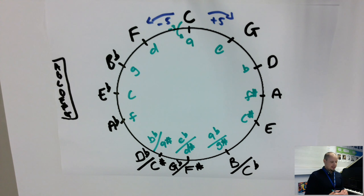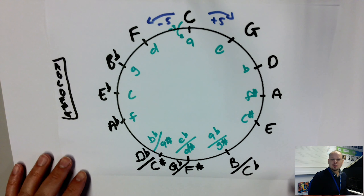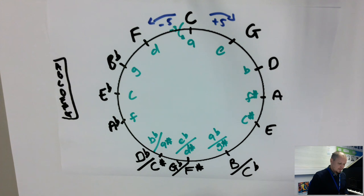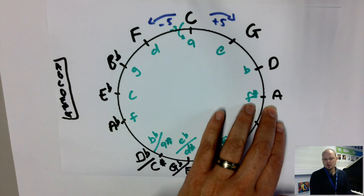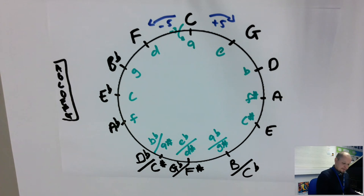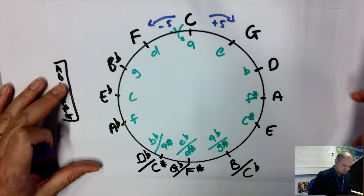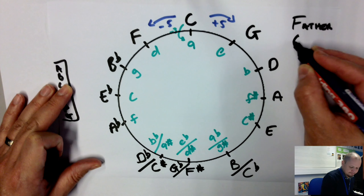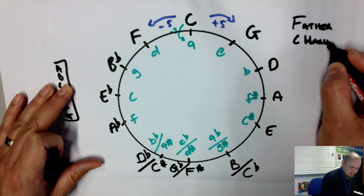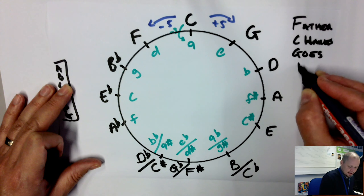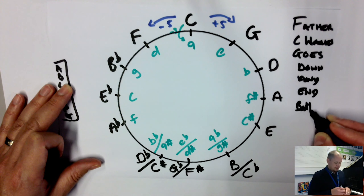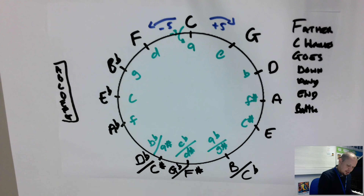If you missed the first video with the key caterpillar, the order of sharps and flats uses the same saying. The order of sharps is found with 'Father Charles Goes Down And Ends Battle' — giving us F, C, G, D, A, E, B.